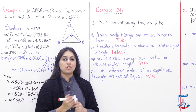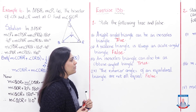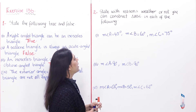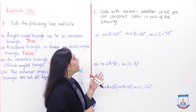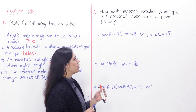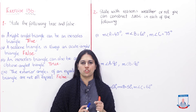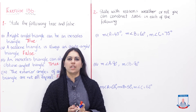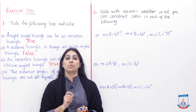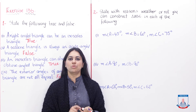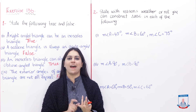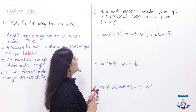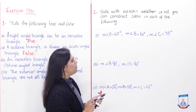Now let's move to Question 2: state with reasons whether or not you can construct triangle ABC in each of the following cases. We have different situations given and we need to figure out whether a triangle can be made. We should know that the interior angles of a triangle, when added together, must equal 180 degrees. First case: measure angle A = 45, measure angle B = 60, measure angle C = 75.